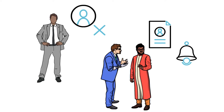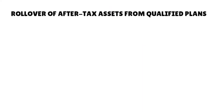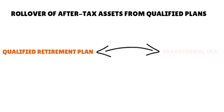One thing that many people don't know about IRAs is that they may roll over after-tax assets from their qualified plan accounts to a traditional IRA. Remember that Form 8606, according to the IRS, is not used for the year that you make a rollover from a qualified retirement plan to a traditional IRA, and the rollover at that point includes non-taxable amounts.